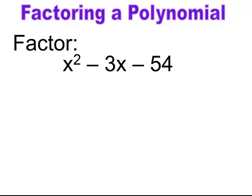Pause and try. C is negative, so the rule is (x − )(x + ). Find factors of 54 that subtract to 3, giving 9 and 6. Since b is negative, the highest factor (9) goes with the minus and 6 goes with the plus.